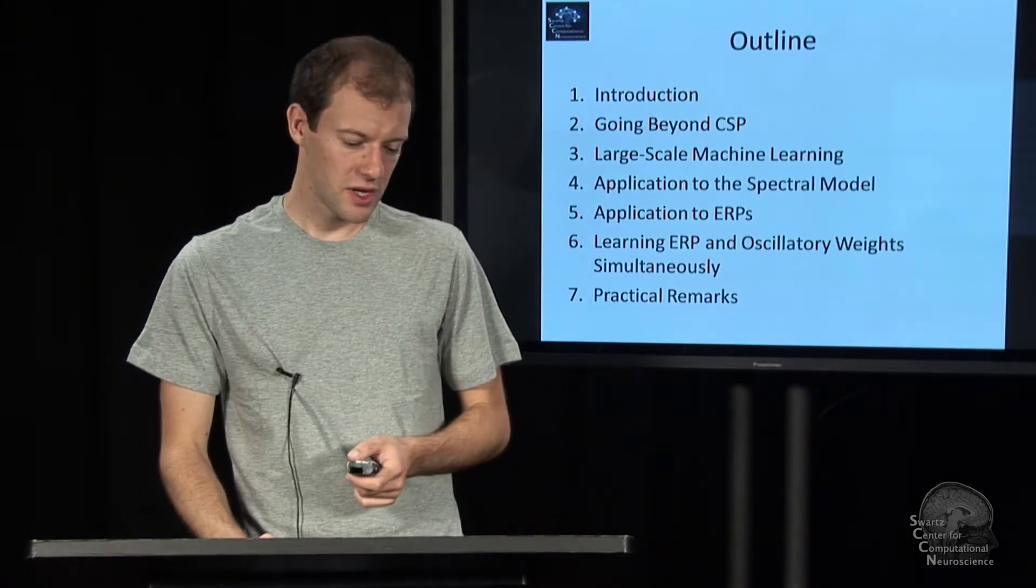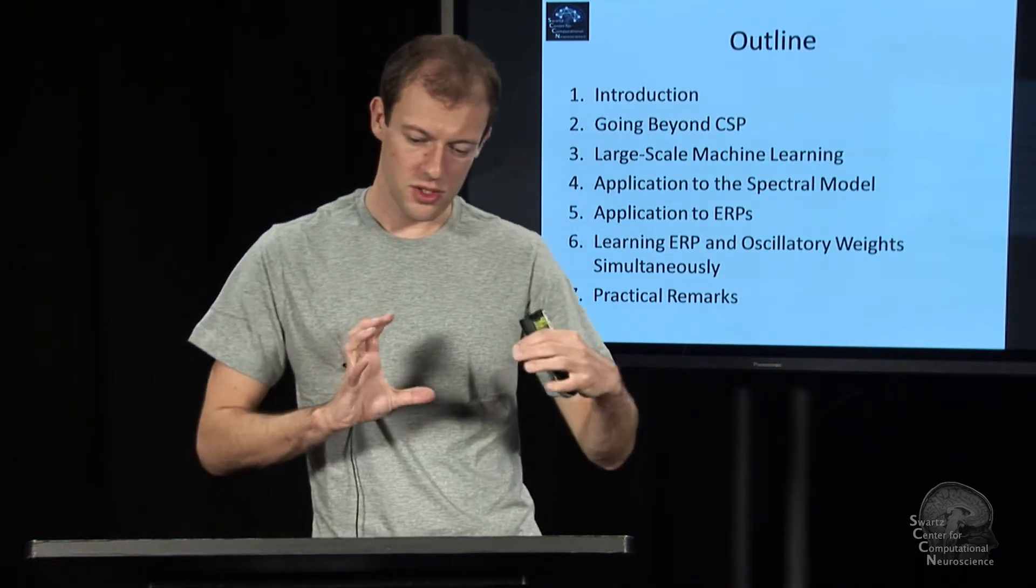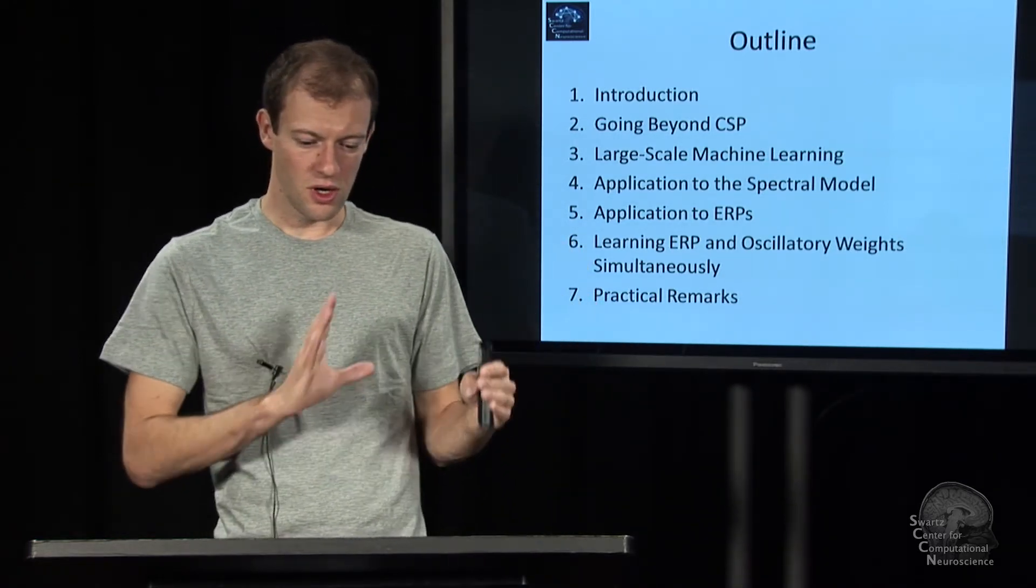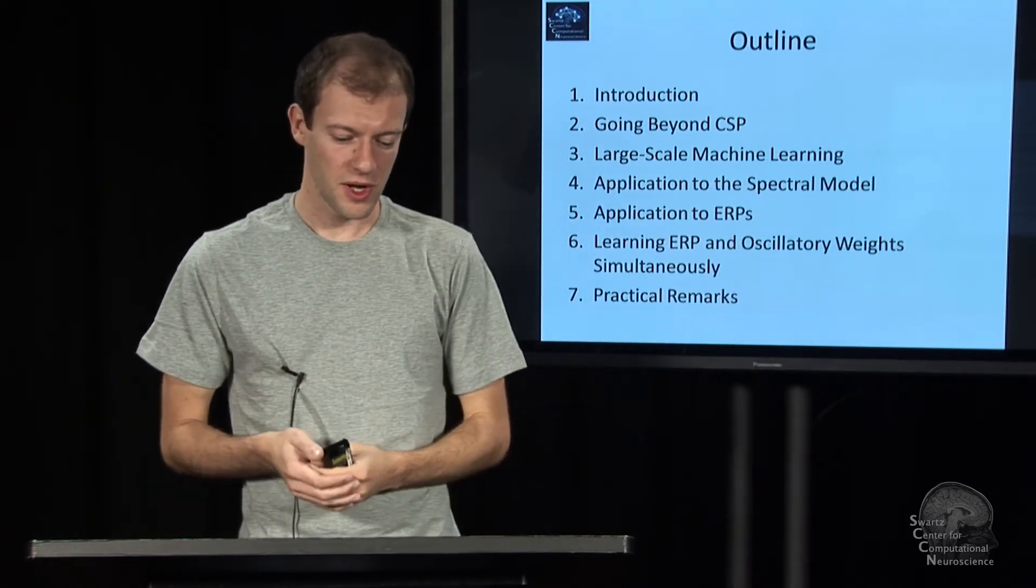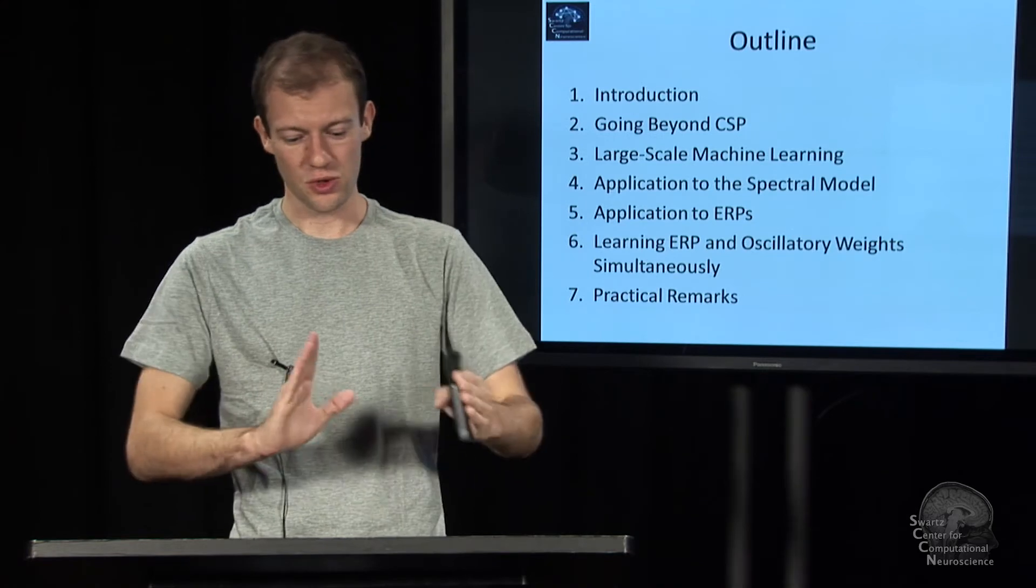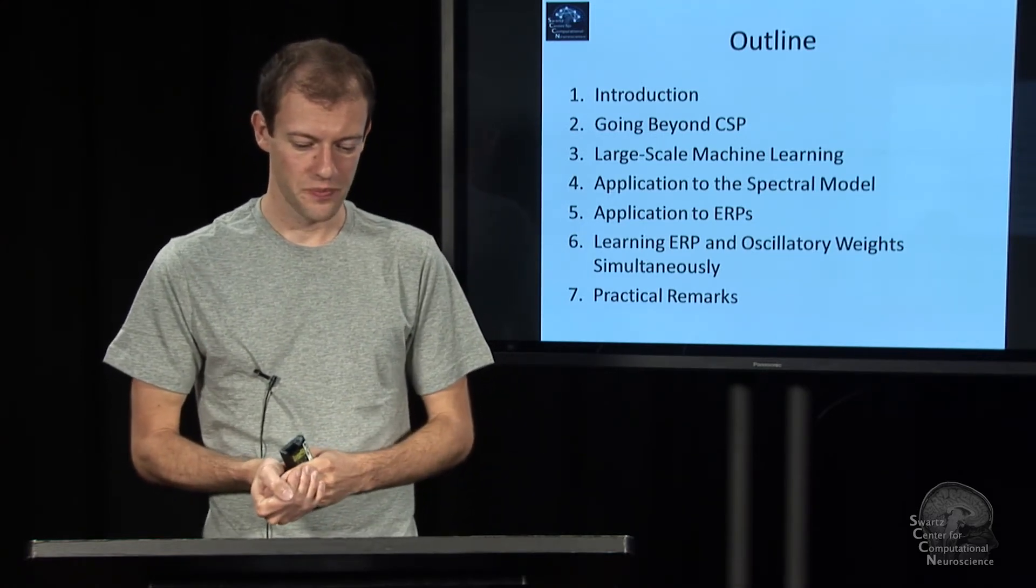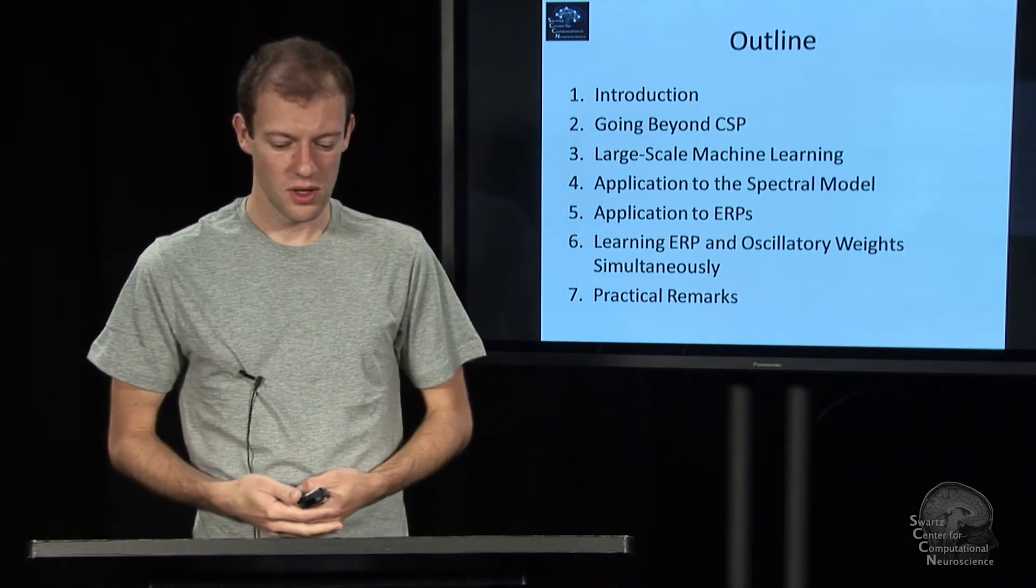And in the second-to-last module number six, we're looking at learning together features in event-related potentials that are informative about our target variable, as well as features in oscillatory processes during the same time period, and potentially multiple kinds of oscillatory processes, and integrating everything into a single approach.